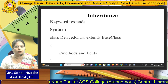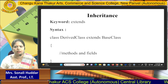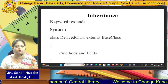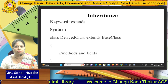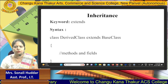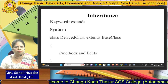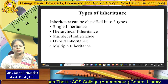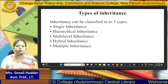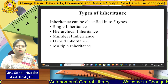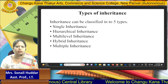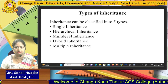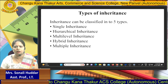In the derived class, you can write any number of methods and fields that are private to that derived class. Whatever methods and fields are available in the base class can also be used in the derived class, so the derived class has both its own members and the base class members. There are mostly five types of inheritance: single inheritance, hierarchical inheritance, multilevel inheritance, hybrid inheritance, and multiple inheritance.